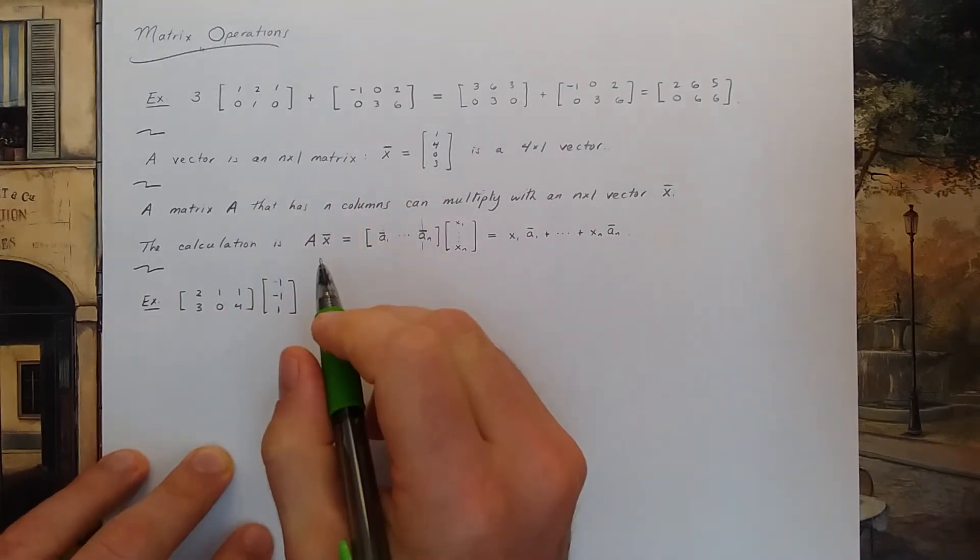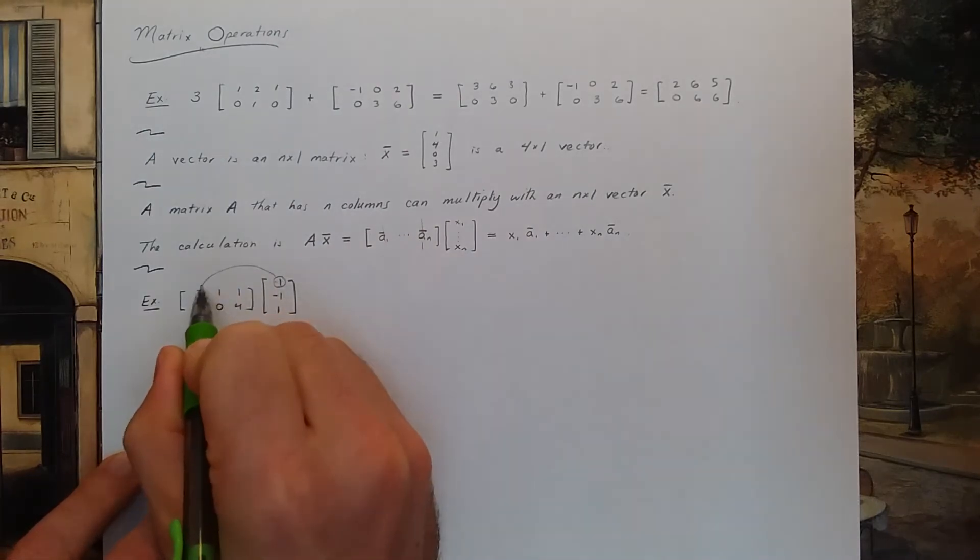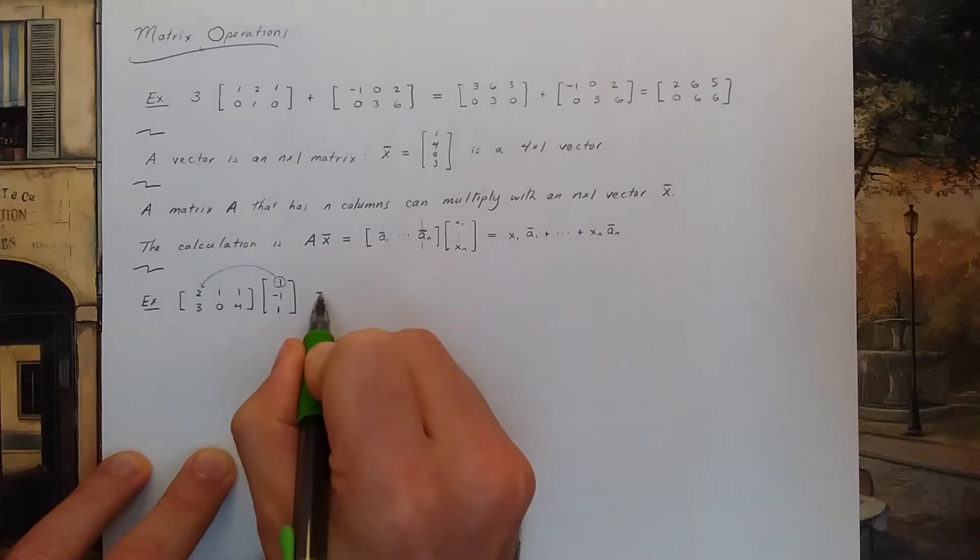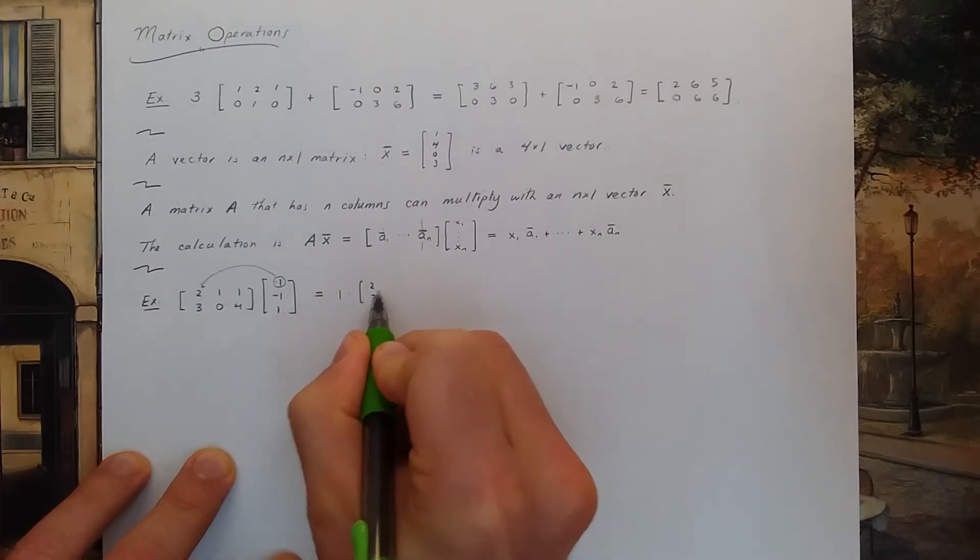So the idea is I take this 1 and I multiply the first column by 1. So I'm going to do 1 times the column 2, 3.